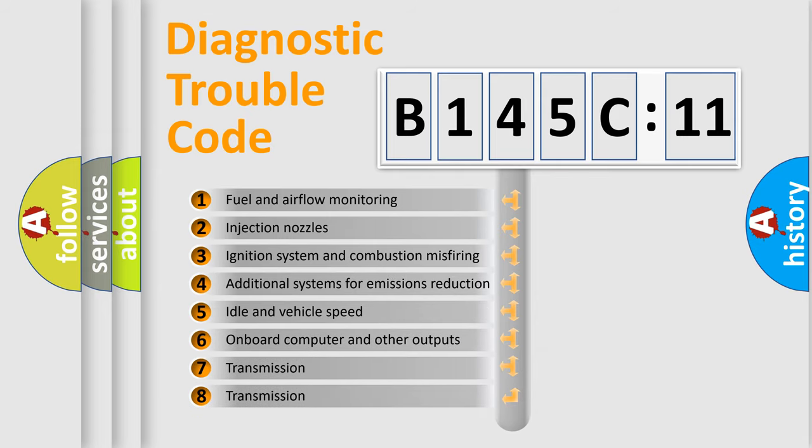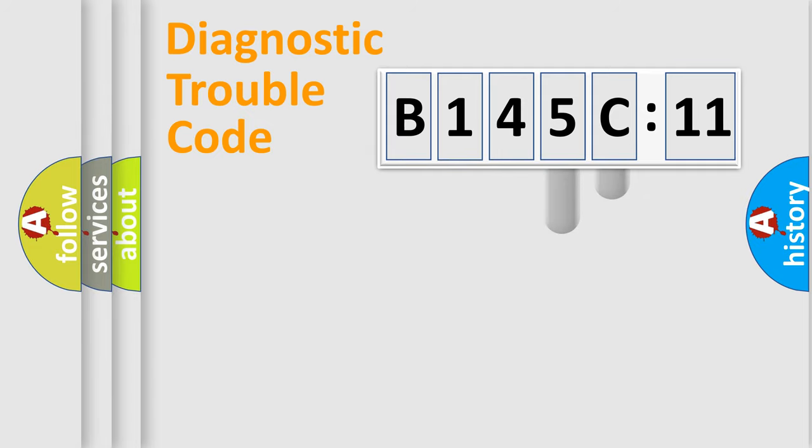The third character specifies a subset of errors. The distribution shown is valid only for the standardized DTC code. Only the last two characters define the specific fault of the group.